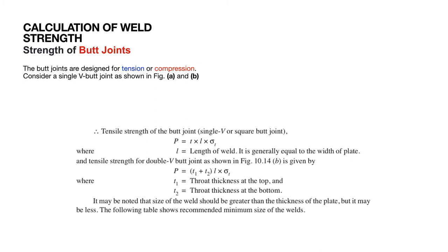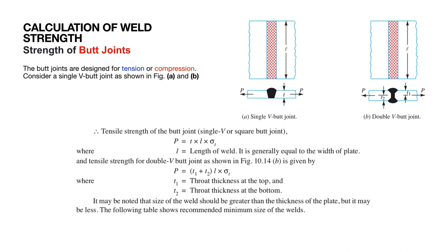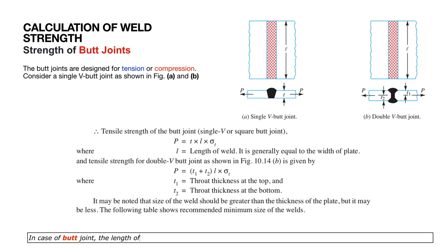We are going to look at the calculation of weld strength, particularly for butt joints. Butt joints can be designed for either tension or compression. As you can see in figure A and figure B, we have a single-V butt joint and a double-V butt joint. The size of the joint is defined by t, the thickness of the plate, because the leg or size of the weld equals the throat thickness, which also equals the plate thickness.